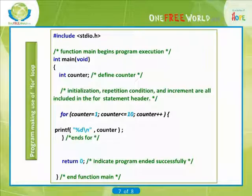The program below makes use of a for loop. The for loop begins by setting counter to 1 and repeats while counter is less than or equal to 10. Each time the end of loop is reached, counter is incremented by 1.